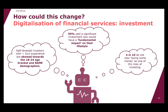Specifically, self-directed investors with less than three years' experience are skewed towards the 18-to-24 age bracket and Black, Asian, and minority ethnic demographics. Age, gender, and ethnicity don't automatically make you vulnerable but can mean you're more likely to exhibit characteristics of vulnerability. Our research found these investors may have the lowest levels of financial resilience — nearly two-thirds said a significant investment loss would have a fundamental impact on their lifestyle — and four in ten did not view losing money as one of the risks of investing.